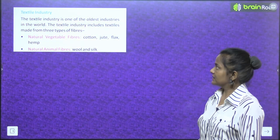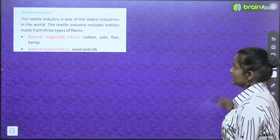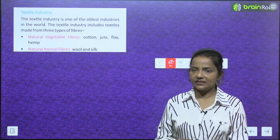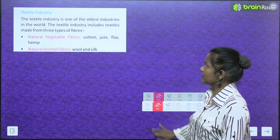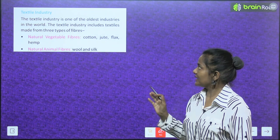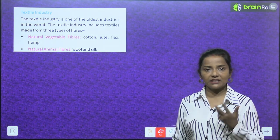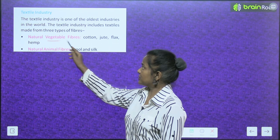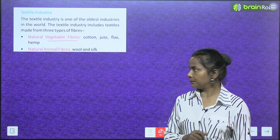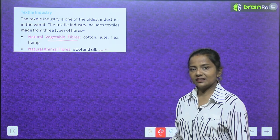Textile industries: the textile industry is one of the oldest industries in the world. The textile industry includes textiles made from three types of fibres: natural vegetable fibres — cotton, jute, flax, hemp; and natural animal fibres — wool and silk.